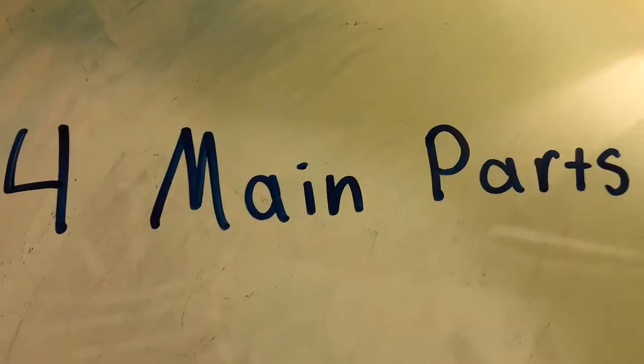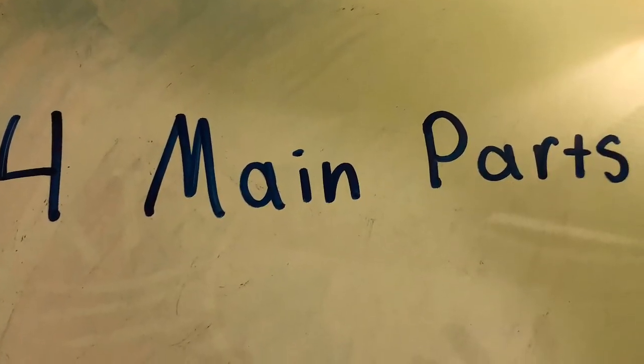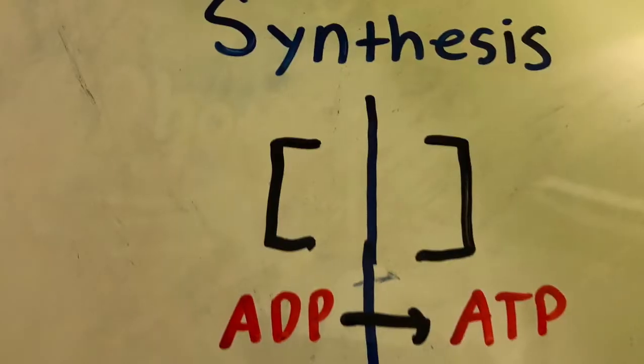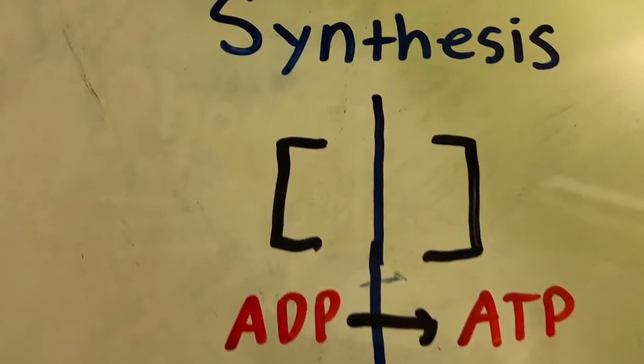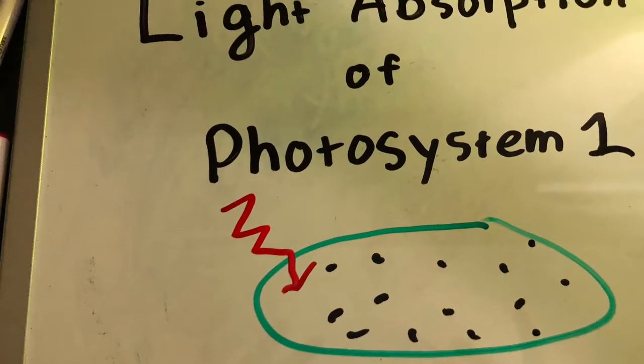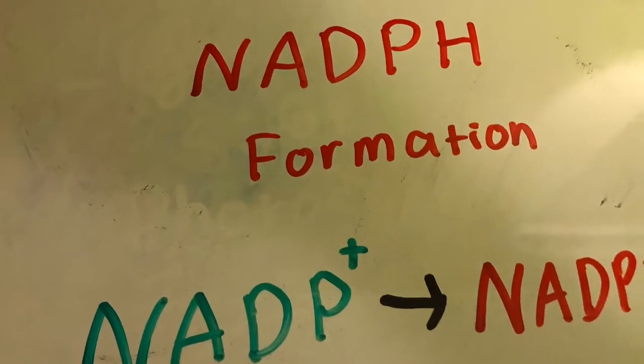There are four main parts of the light reaction process. First, light absorption of photosystem II. Second, ATP synthesis. Third, light absorption of photosystem I. And finally, NADPH formation.